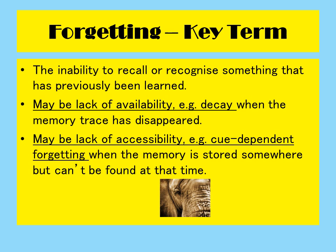It's important to have a basic understanding of forgetting. Forgetting is when we have an inability to recall or recognise something previously stored as a memory. This may be due to lack of availability — where decay means the memory trace has disappeared — or lack of accessibility, where there is no cue present to trigger the memory. For example, when you smell something, it might instantly remind you of the last time you smelt it and the memory encoded at that time, because the smell is acting as a cue to retrieve the memory.